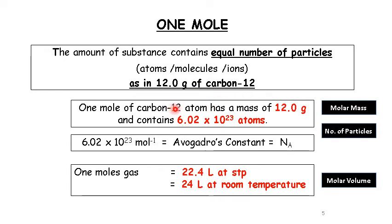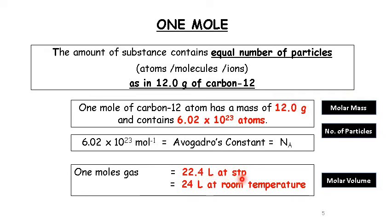For one mole of carbon-12, it has a mass of 12.0 grams — that is its molar mass. At the same time, it contains 6.02 times 10 to the power of 23 atoms. This number of particles has a name: we call it Avogadro's constant, with the symbol Nₐ. At the same time, one mole of gas equals 22.4 liters at STP and 24 liters at room temperature. This is molar volume. So, one mole has these three properties.